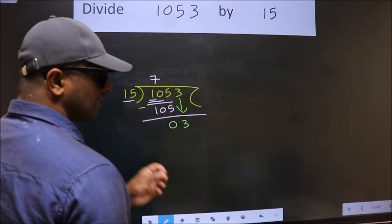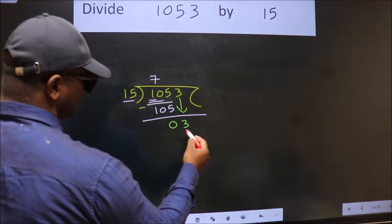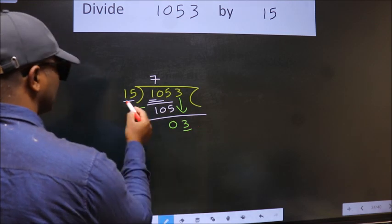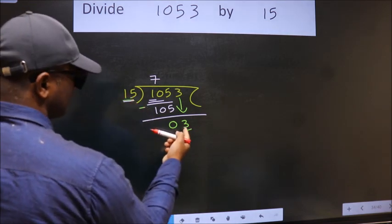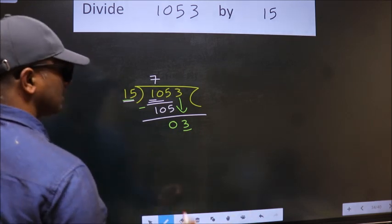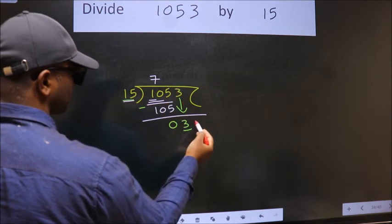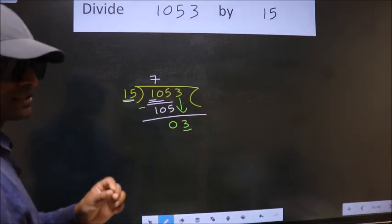After this step, the mistake happens. And the mistake is this: here we have 3, here 15. 3 is smaller than 15. So what many do is they directly put a dot and take 0, which is wrong.